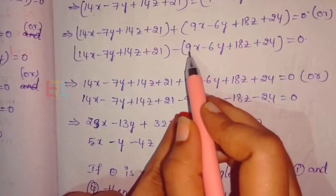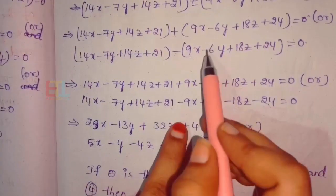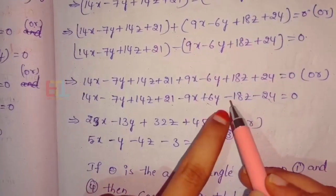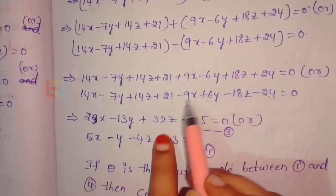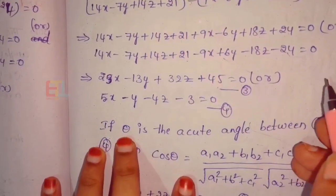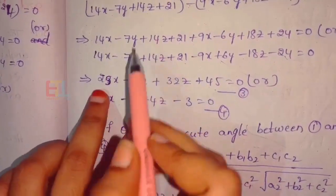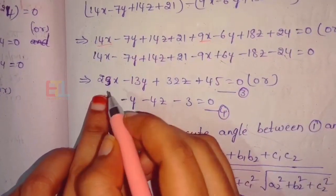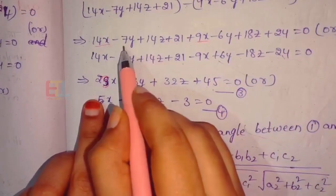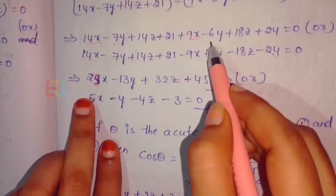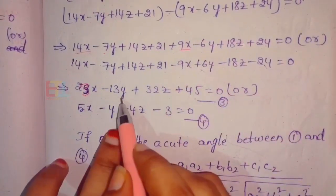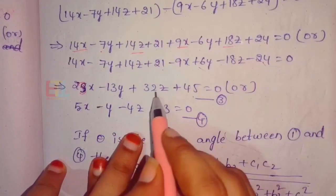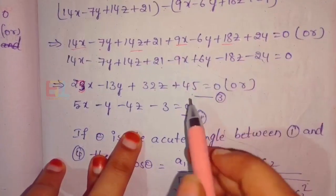For the plus case: adding 14x and 9x gives 23x; minus 7y and minus 6y gives minus 13y; 14z and 18z gives 32z; 21 and 24 gives 45. So equation 3 is: 23x minus 13y plus 32z plus 45 equal to 0.